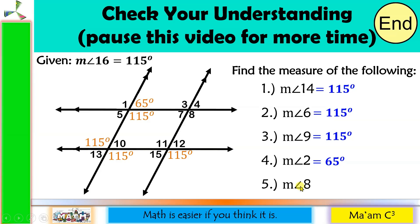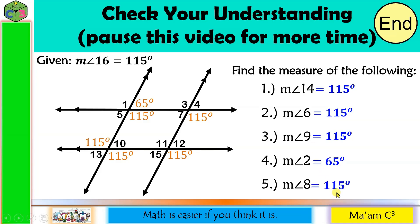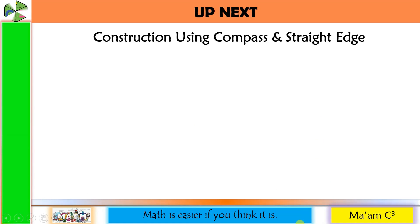Last one is angle 8. Angle 8 is here. Parallel lines cut by a transversal — one on the inside, the other one on the outside. These are corresponding angles, and corresponding angles are congruent. Therefore, angle 8 is also 115 degrees. Our next lesson is construction using compass and a straight edge.